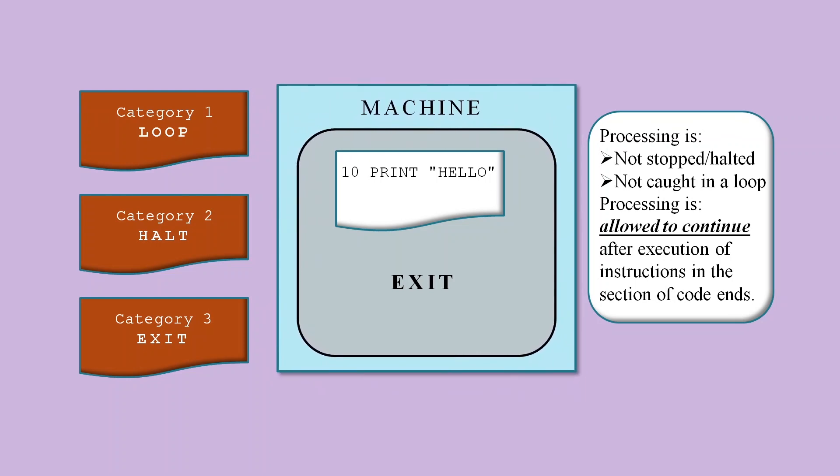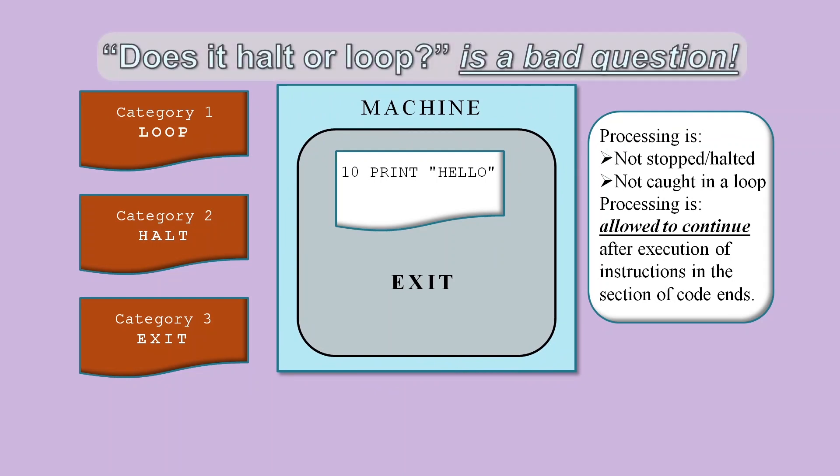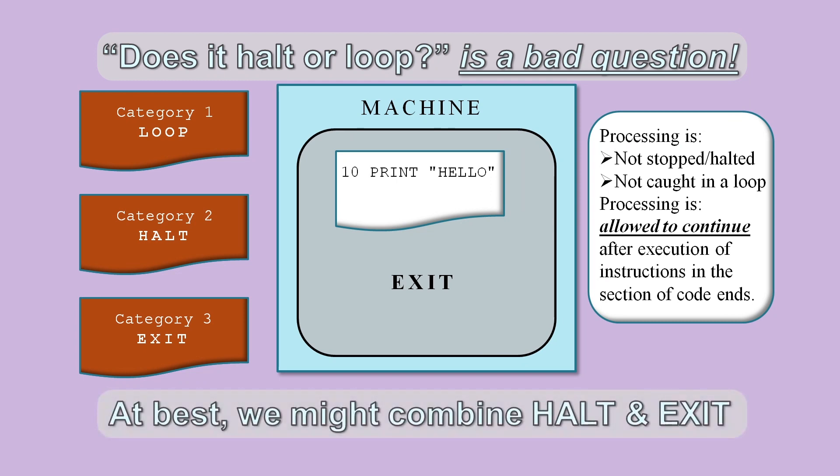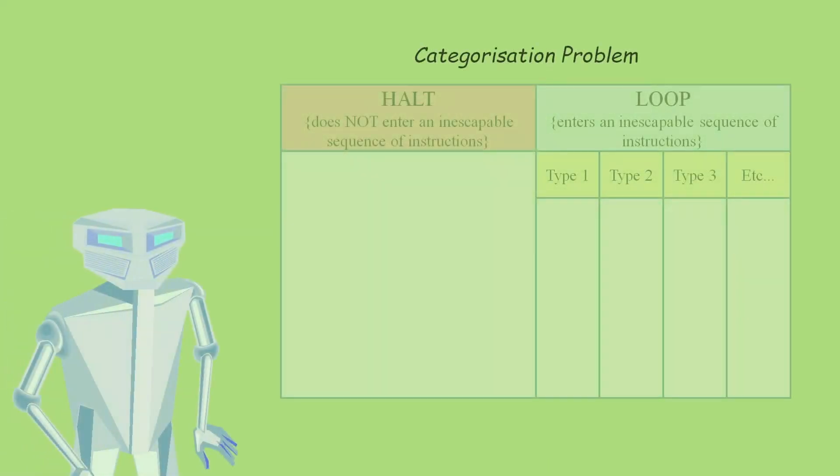So if we've got three categories instead of two, the question 'does it halt or loop' could be considered to be misleading. If we were being generous, we might consider that the term halt refers to all states apart from the loop state, so it could include both categories: stop the machine as well as exit the code. So we might describe the halting problem as a problem about categorization.